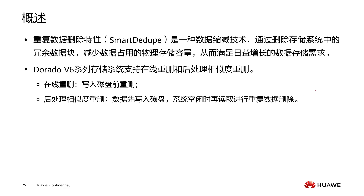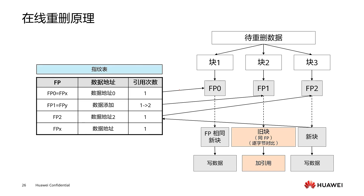Online deduplication is the process of deduplication before writing to the disk. Post-processing similarity deduplication means data is first written to our disk, and then when the disk system is idle, the data is read and duplicate data deletion operations are performed. Let's take a look at the principle of online heavy deletion.